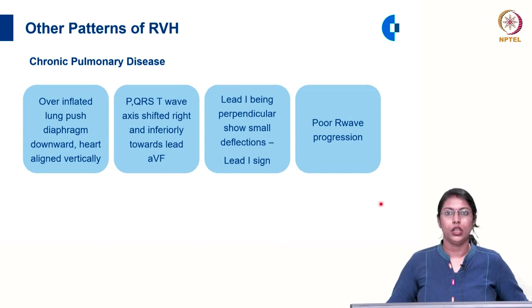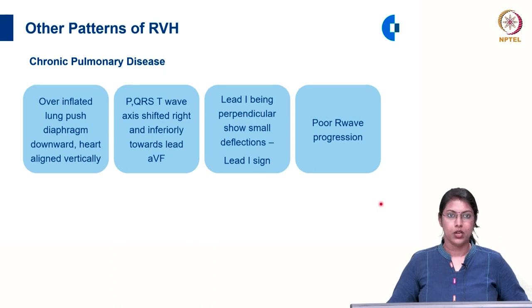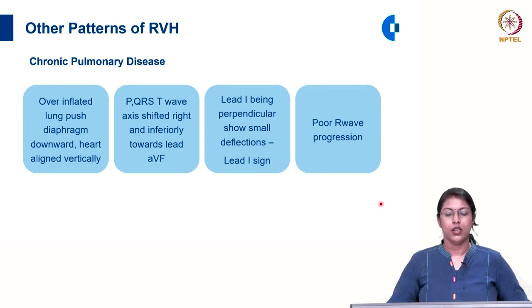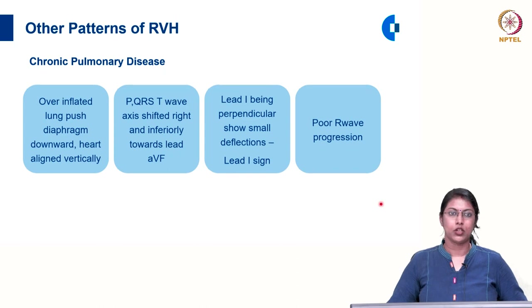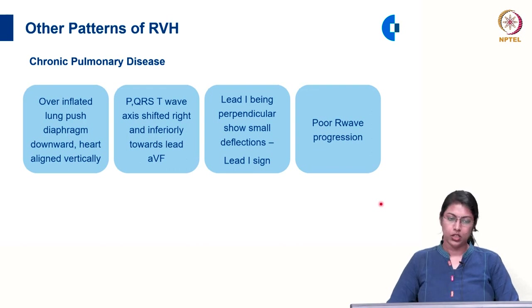In chronic pulmonary disease like emphysema, there is overinflation of the lung which pushes the diaphragm downward, aligning the heart vertically. The P, QRS, and T wave axes are all shifted rightward and inferiorly towards lead AVF. Since lead 1 is perpendicular to lead AVF, lead 1 will show very small deflections — this is called the lead 1 sign in COPD. In addition, there will be poor R wave progression in the ECG.